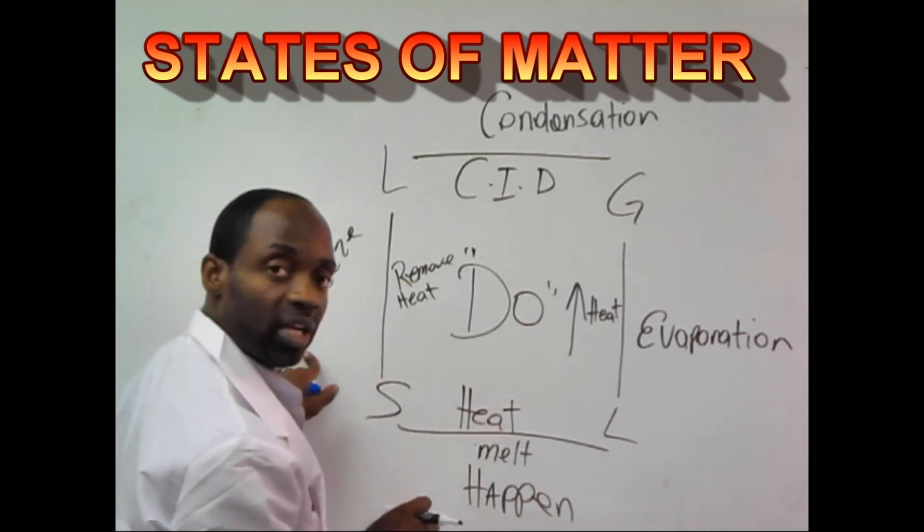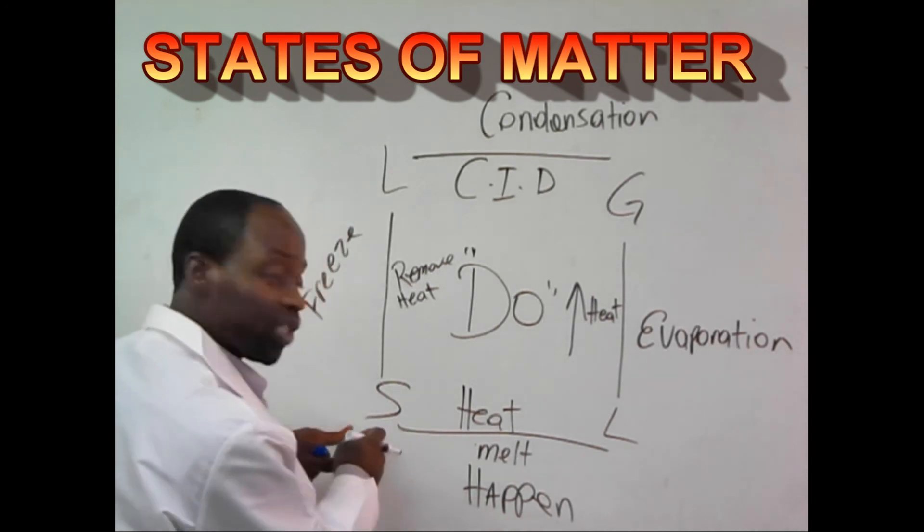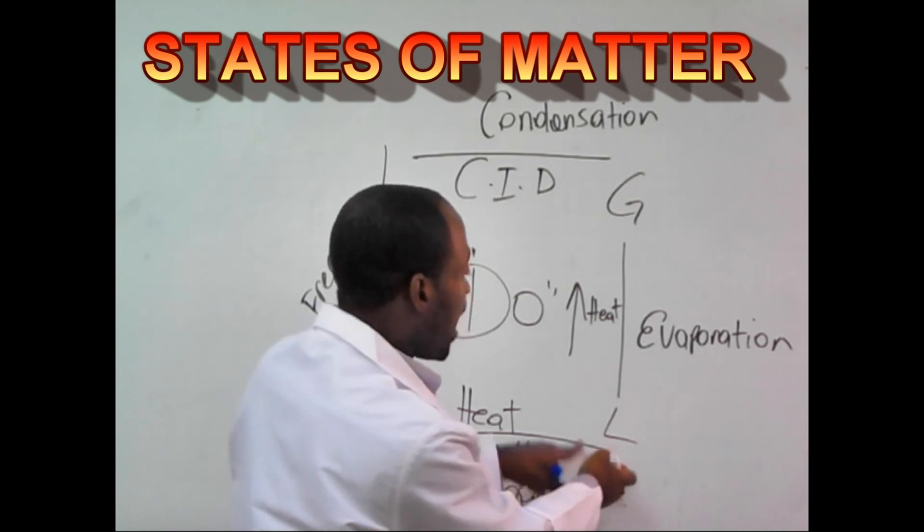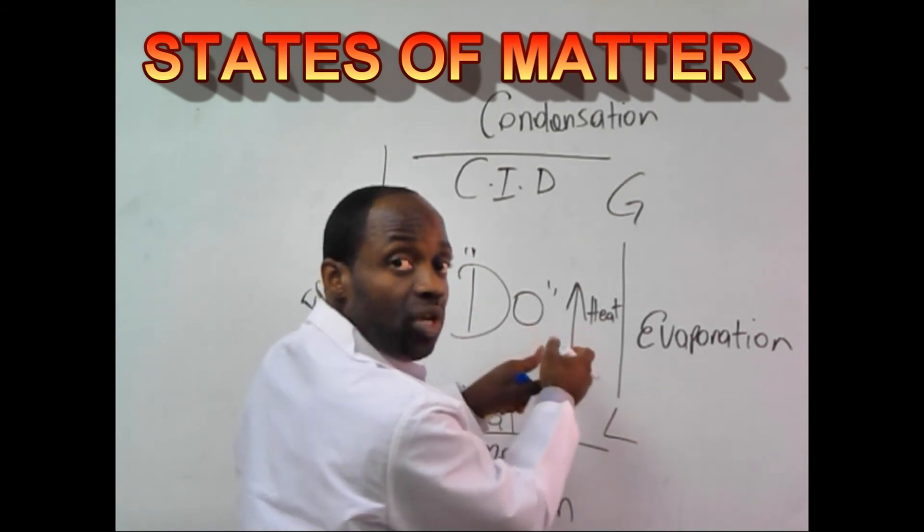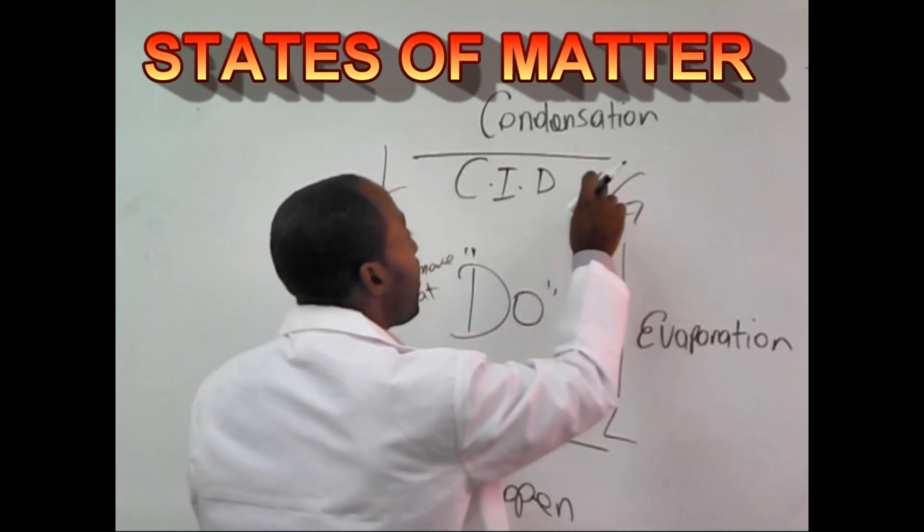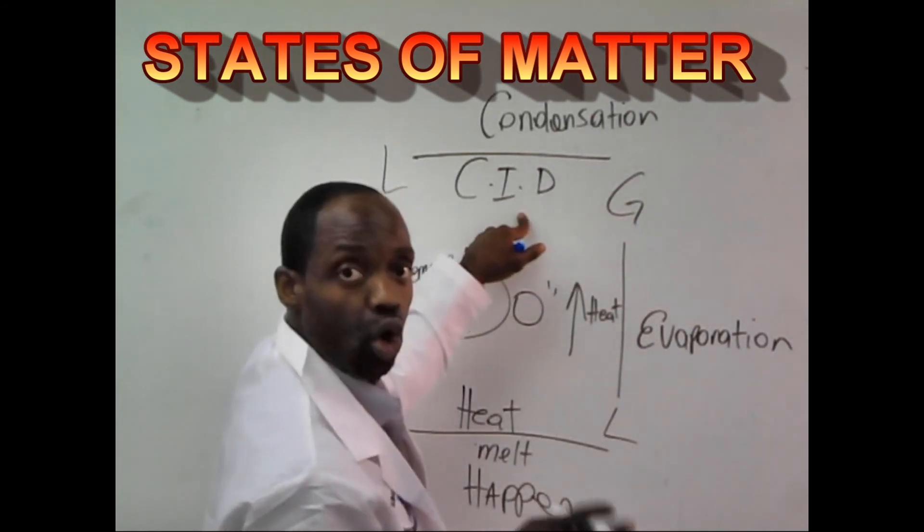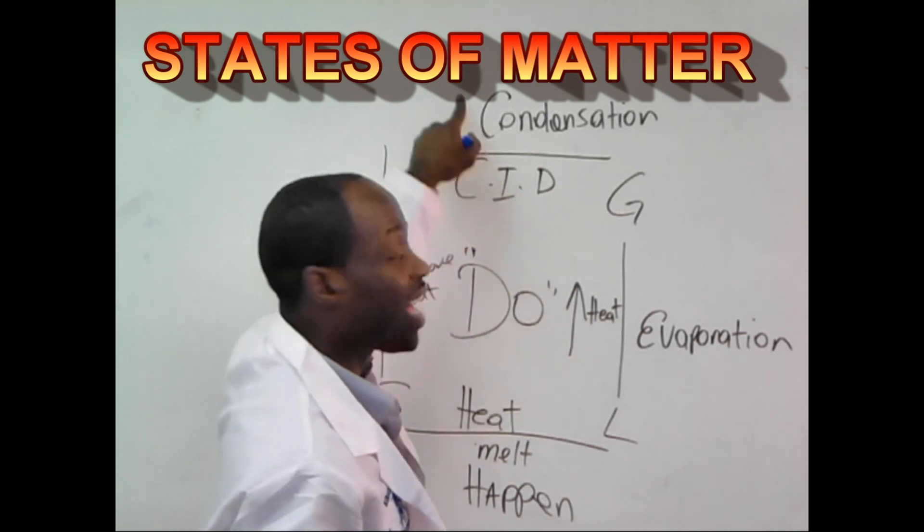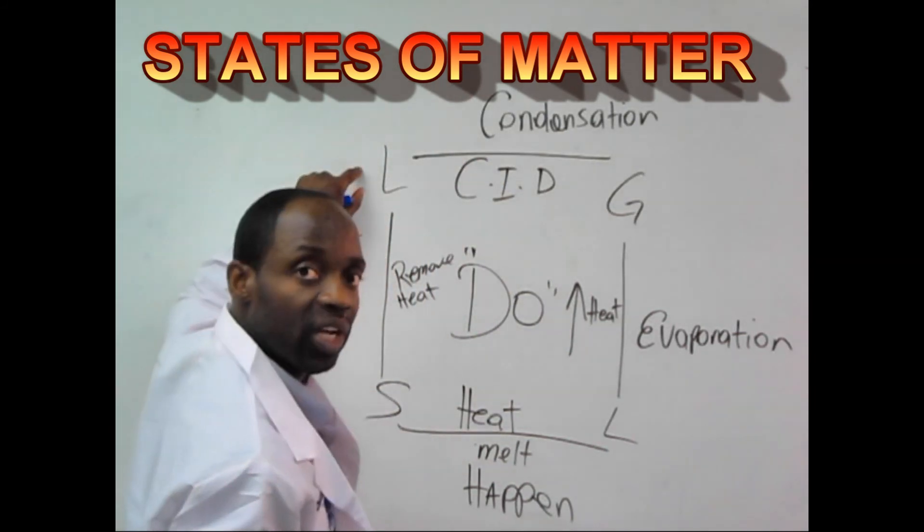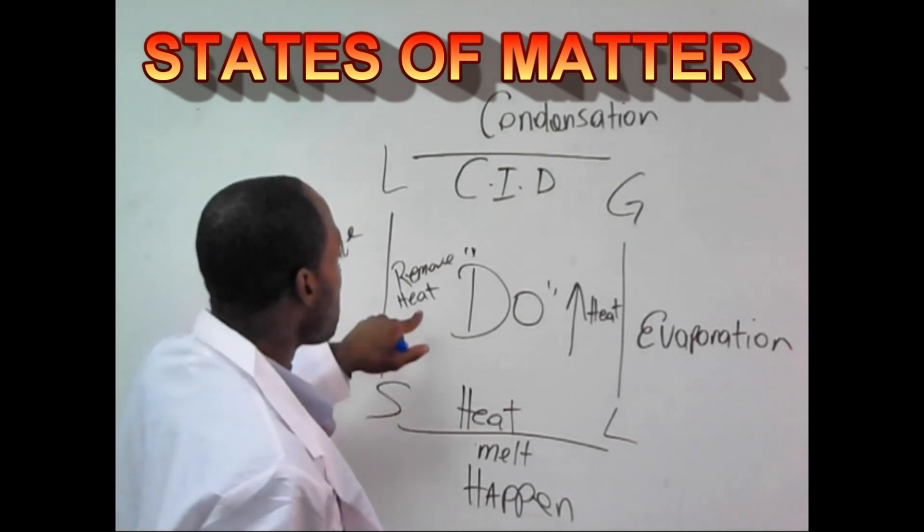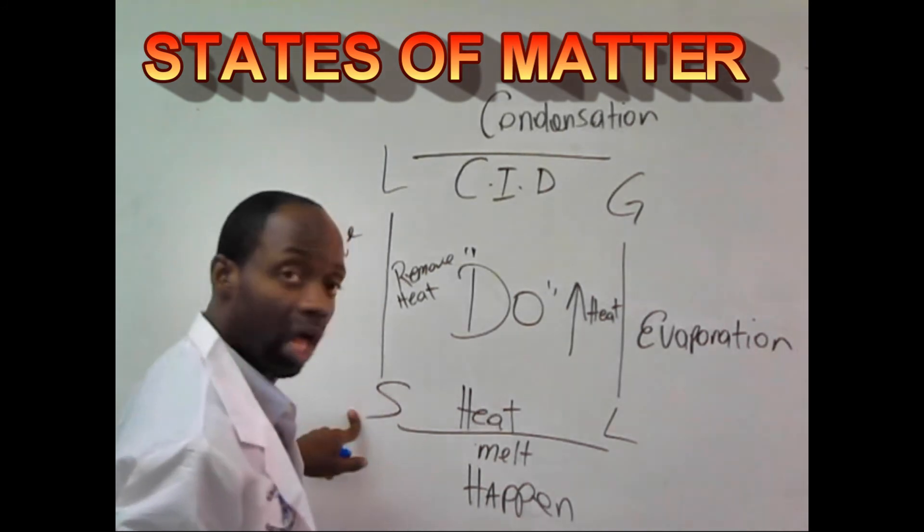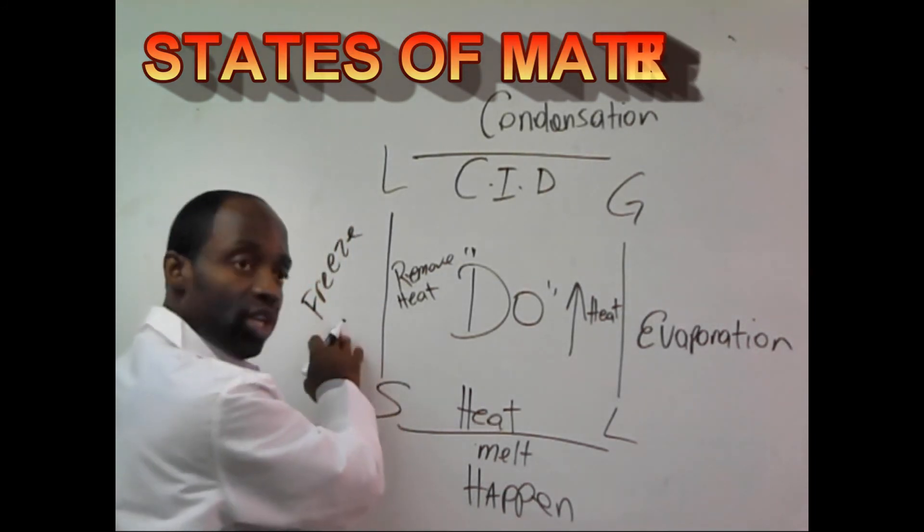Let's recap. I have a solid, I do heat, melt happened. Now I have a liquid, I increase heat, I do heat, then evaporation happened, turns it into a gas. Now I have a gas, I do cool down or reduce the temperature, then condensation happened. Condensation happened, now I have a liquid, so now I need to what? Remove the heat, that's what I do, and it turns into a solid. And what happens? Freeze happened.